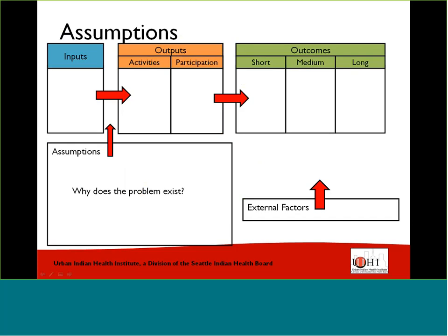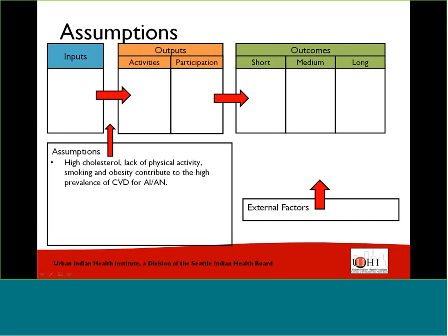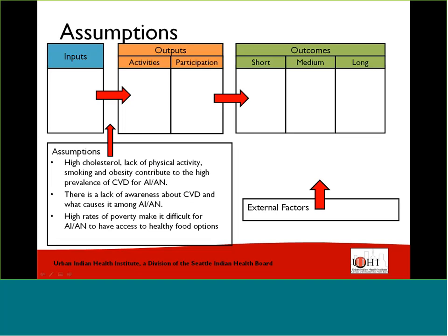Now let's look at our assumptions. Assumptions are what we know or believe to be contributing to the existence of the problem or situation. This section helps us define our approach to solving a problem by asking the question: why does the problem exist? Some examples of assumptions we may have about the high rates of CVD in American Indian and Alaska Native communities may include high cholesterol, lack of physical activity, smoking, and obesity. We may think that there's a lack of awareness about CVD and its risk factors, that people aren't getting screened enough, or that high rates of poverty make it difficult for American Indians and Alaska Natives to have access to healthy food. These assumptions about what contributes to the problem help us see where our program can intervene. It also might not be realistic to address all of these contributing factors in one program.